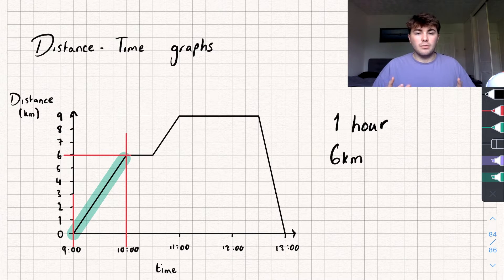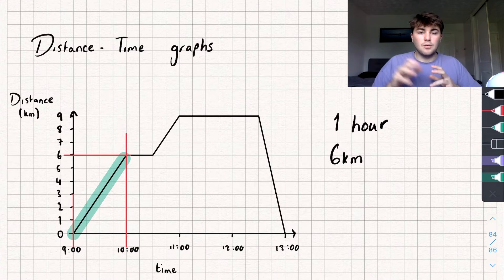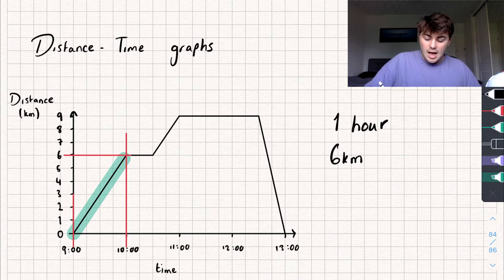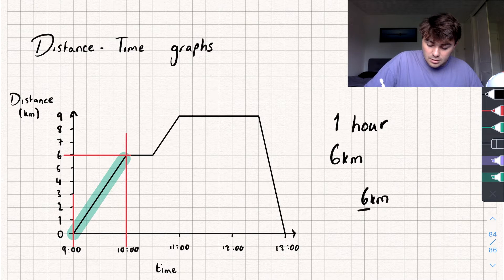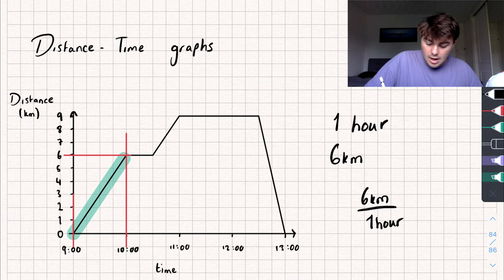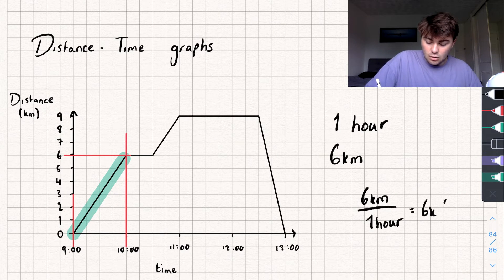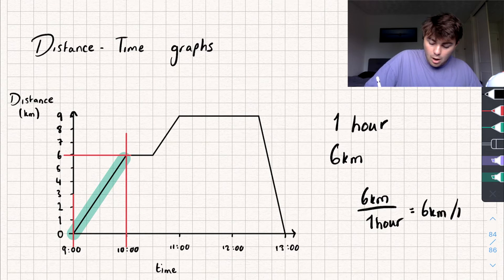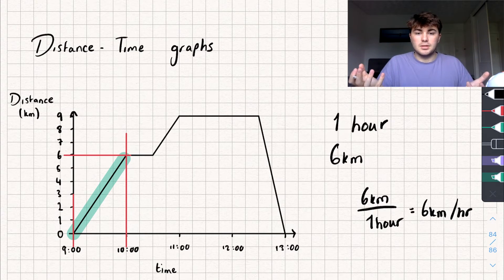To find the gradient of a line, I do the difference in my y-axis divided by the difference in my x-axis. That would be 6km divided by 1 hour, so I must be traveling at 6km per hour.